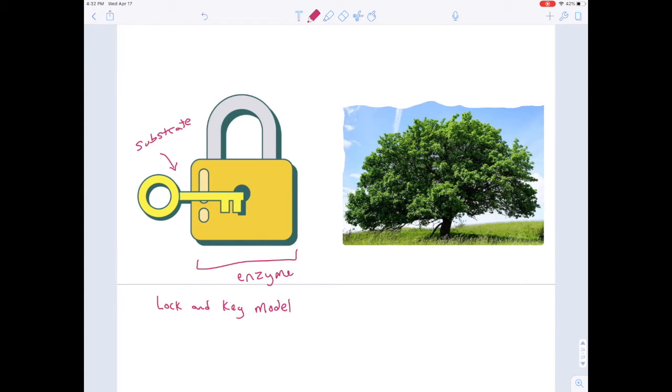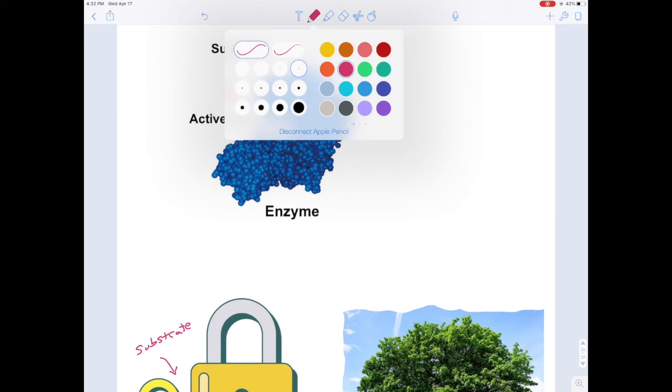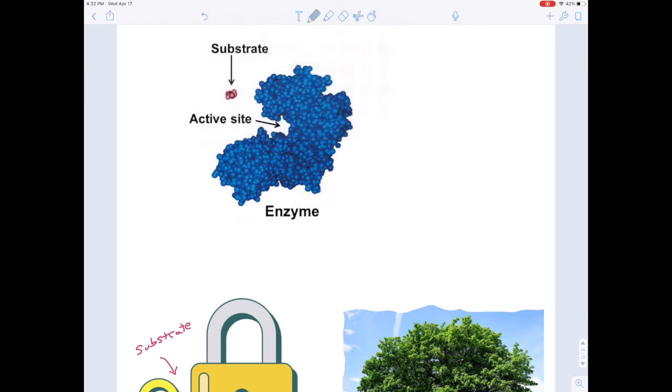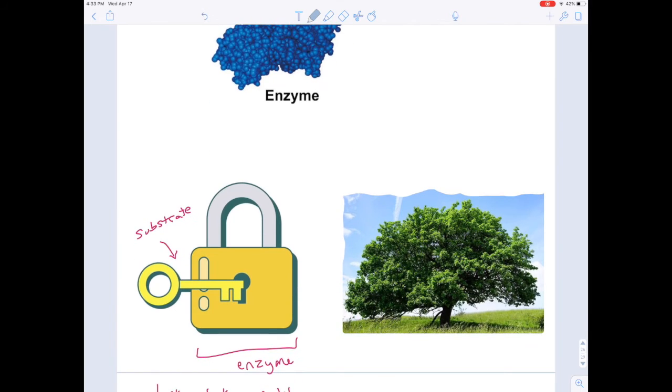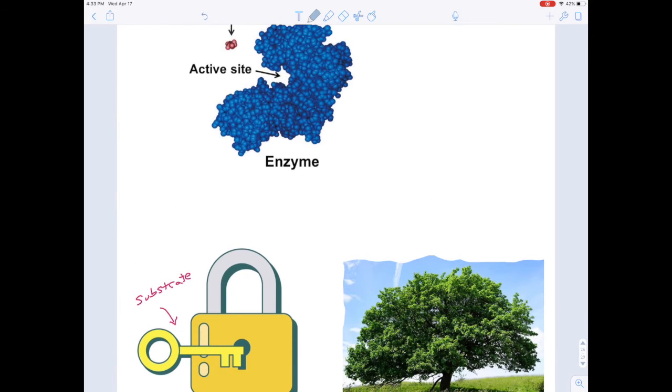The hypothesis is that the enzyme and the substrate both have rigid shapes that don't change. But these enzymes are surrounded by water. And the water molecules are constantly bumping against it, pushing it, slapping into it. And all of that changes the enzyme's shape in a similar way as the crown of a tree changes when the wind blows through it.